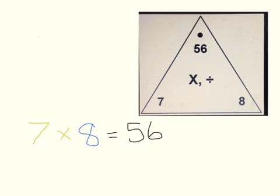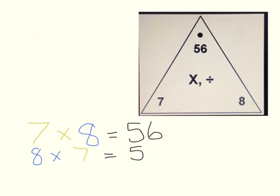We also know from the commutative property that we can go in a different order and get the same answer. So we can also take eight times seven to get fifty-six. And if I keep every number in the same color, you can see how the facts are related to each other.